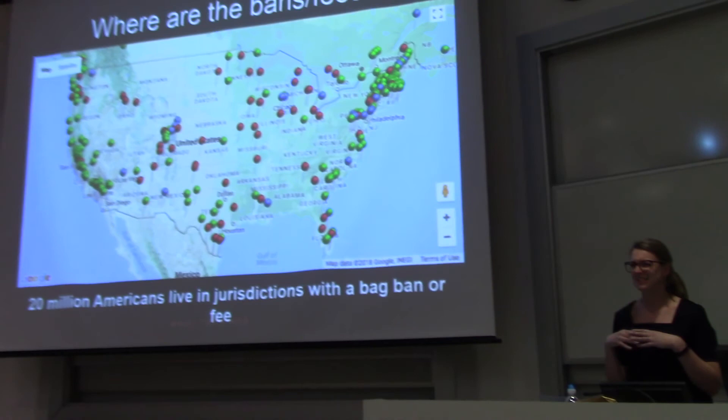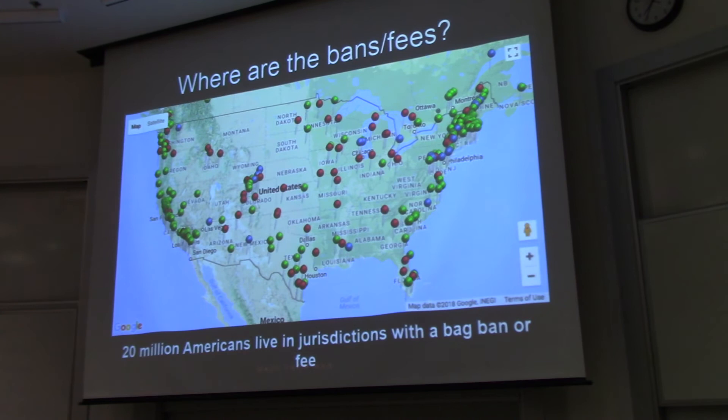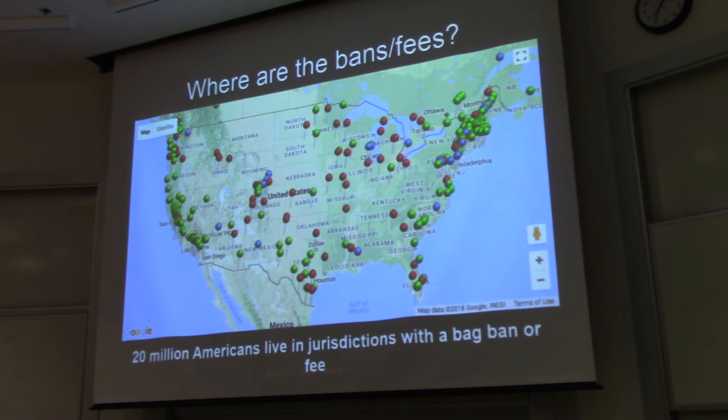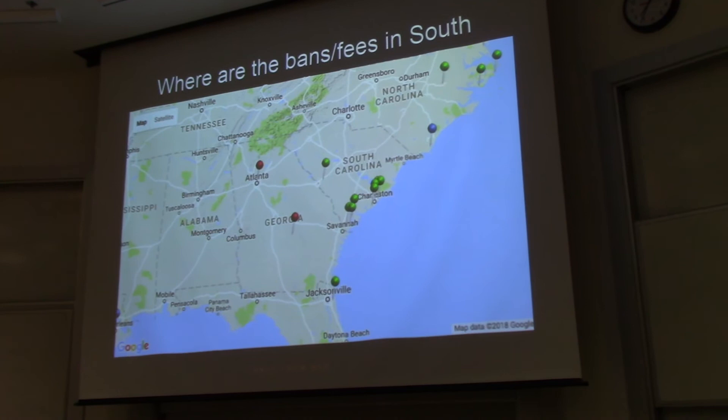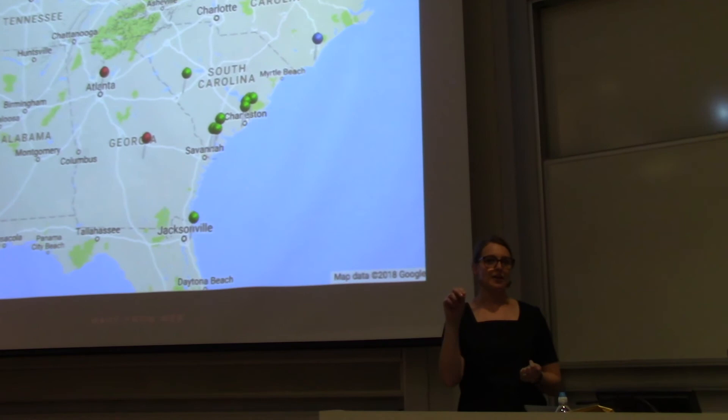And they started to think about what they could do to help combat this problem. And so they started to think, well, what about a ban on some of these single-use plastic products? And they asked us to provide them some data on where these bans were in effect, how effective they were, and what that would look like. And so we started working with Beaufort County Council and we found that there are 20 million Americans living in jurisdictions where there are bans on some sort of single-use plastic product, whether that's plastic bags, styrofoam cups, styrofoam containers, that sort of thing. And there were a couple in South Carolina as well, little tiny communities, Isle of Palms and Folly Beach, that implemented bans on single-use plastic bags. And they were working.